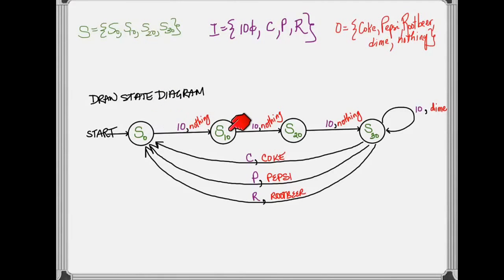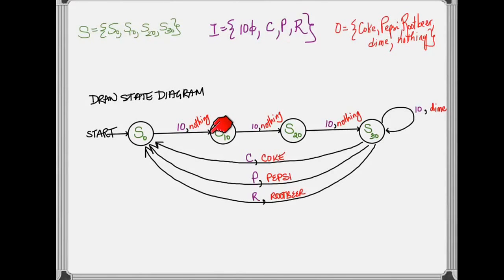To do this, the vertex of each diagram is going to be the states. So I have one for S0, S10, S20, and S30. If I can get from one state to another, I will insert a directed edge, and I will label that edge with the input and the output that correspond.